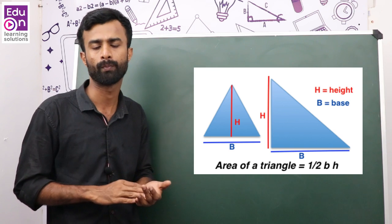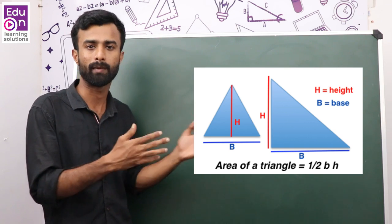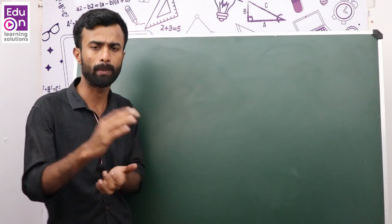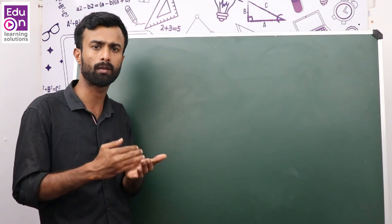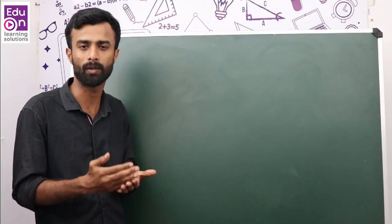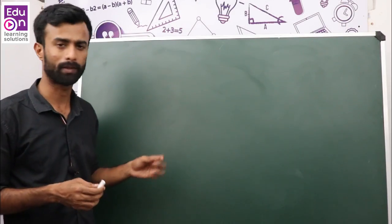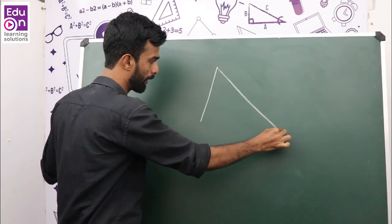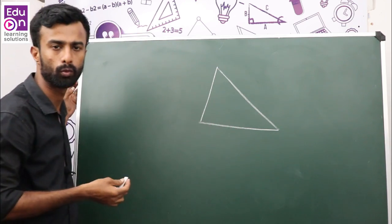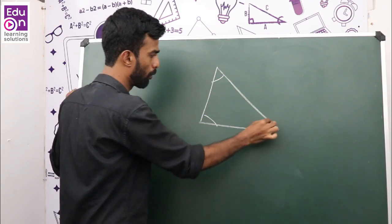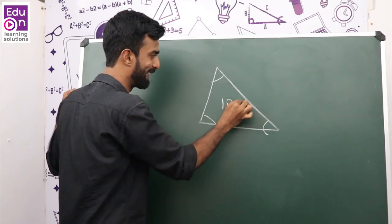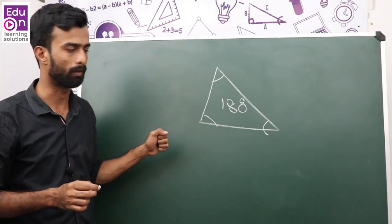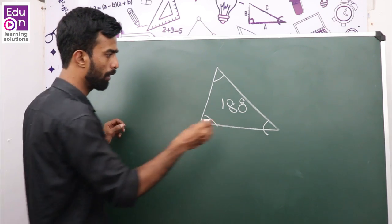We will talk about the equation — one half B H. We will talk about the triangle matrix. A triangle has 3 angles, and those 3 angles sum to 180 degrees.